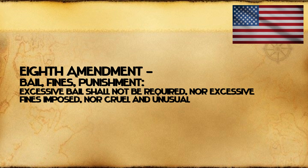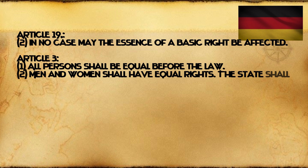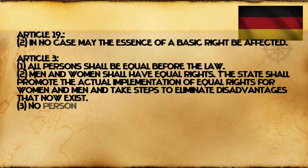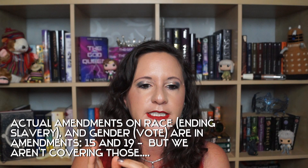The Eighth Amendment — Bails, Fines, and Punishment. "Excessive bails shall not be required, nor excessive fines imposed, nor cruel and unusual punishments inflicted." Article 19, Paragraph 2 states: "In no case may the essence of a basic right be affected. All persons shall be equal before the law. Men and women shall have equal rights. The state shall promote the actual implementation of equal rights for women and men and take steps to eliminate disadvantages that now exist. No person shall be favored or disfavored because of sex, parentage, race, language, homeland and origin, faith, or religious or political opinions. No person shall be disfavored because of disability." I feel these are similar because no cruel and unusual punishment should be inflicted, as well as everybody should be considered equal before the law. Obviously given the current U.S. political climate, that's not the case, but that is what it does say in our Constitution and we should be following that.